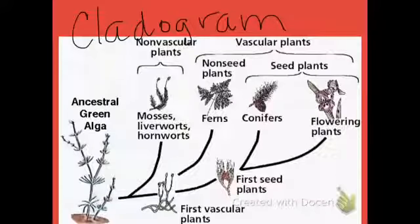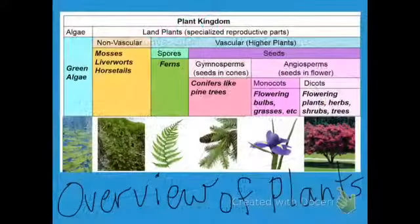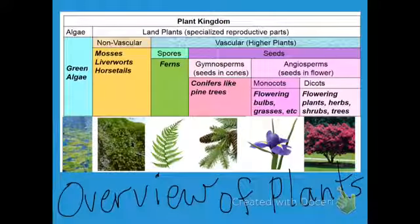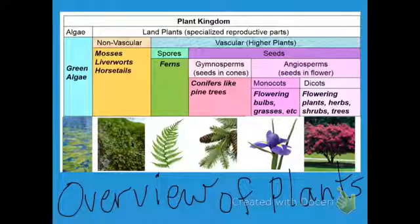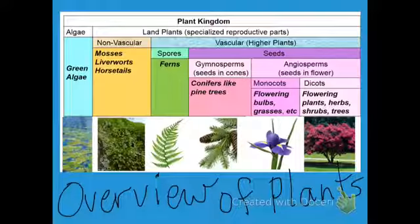This diagram shows a type of cladogram that shows the evolutionary history of plants. In this diagram, notice how it moves from left to right: green algae, then non-vascular plants, then vascular plants with spores, then plants with seeds that are gymnosperms with seeds in cones, then angiosperms that have seeds in flowers, and then monocots and dicots.